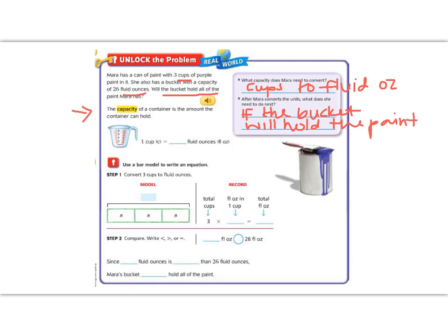Alright, so looking at our conversion chart, it looks like 1 cup equals 8 fluid ounces. So if 1 cup equals 8 fluid ounces, then we are going to go from something larger to something smaller.